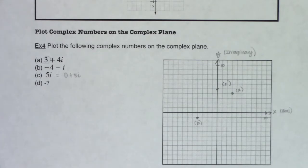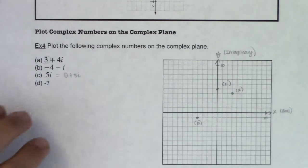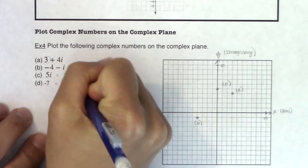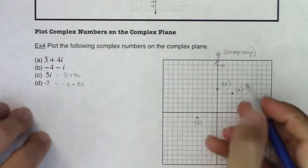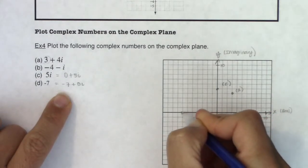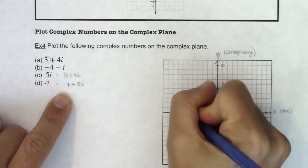And then similarly for part d, part d doesn't have an imaginary part. I could rewrite this as negative 7 plus 0i. So I need to move 7 to the left. 1, 2, 3, 4, 5, 6, 7. And 0 units up or down.